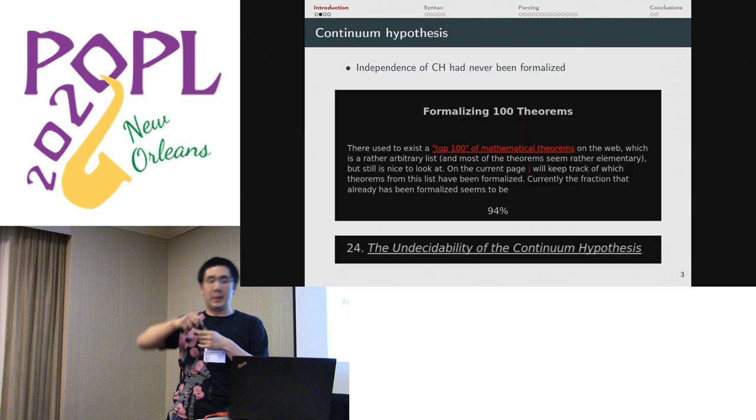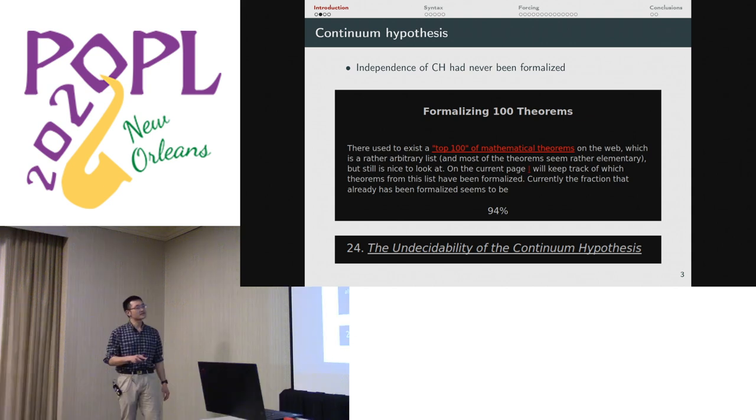It's never been formalized. I heard about this problem when I was in Vietnam with Tom Hales at a formal abstract summer school, and we wanted to compare Lean to other theorem provers. Freek van Dijk has this famous list of 100 theorems he claimed elementary, but Fermat's last theorem is on there. Most of them have been formalized. In fact, most have been formalized by John Harrison. But one has not been, and it's the independence of CH.